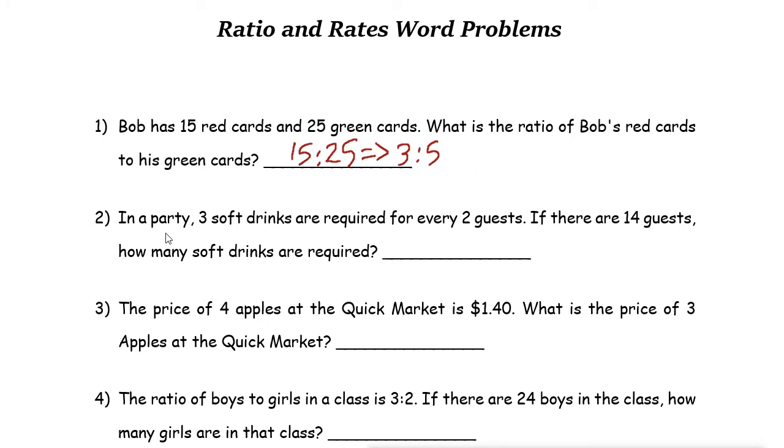Let's take a look at the next one. In a party, three soft drinks are required for every two guests. So three soft drinks for two guests. If there are 14 guests, so 14 you can write it here. How many soft drinks are required?